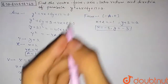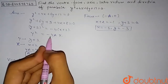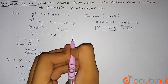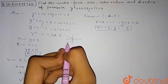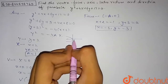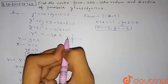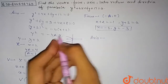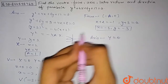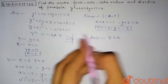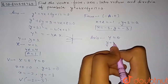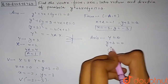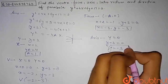Now we find the axis of this parabola. Since this parabola opens towards the negative x-axis, the axis for the general parabola is y = 0. Replacing y with (y + 3), we get y + 3 = 0, so the axis of the parabola is y = −3.